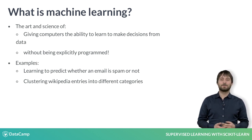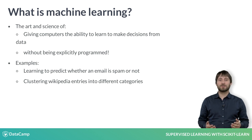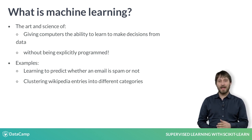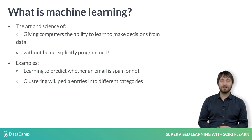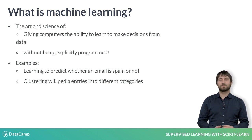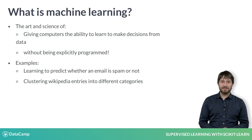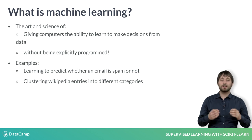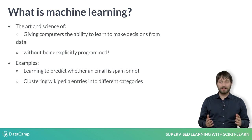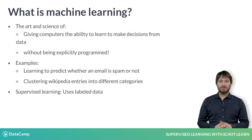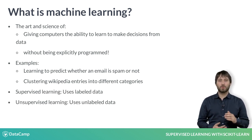Notice that in the first example, we are trying to predict a particular class label — that is, spam or not spam. In the second example, there is no such label. When there are labels present, we call it supervised learning. When there are no labels present, we call it unsupervised learning.